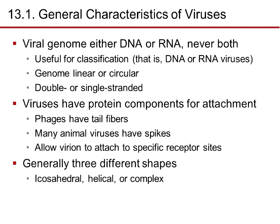The viral genome — the genotype — can be either DNA or RNA, never both; it's one or the other, and can be single or double stranded. The genome can be linear or circular. Viruses have protein components for attachment. Phages have tail fibers that allow them to insert into the host cell. Many animal viruses have spikes that allow the viron to attach to a specific receptor site on given cells.